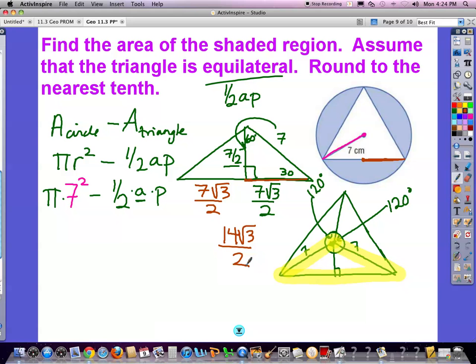Wait, 14 over 2, that's not reduced down enough. That's 7 square root 3. So this entire length is 7 square root 3. That is only one side. I need to do the entire perimeter: 7 square root 3, 7 square root 3. So that is a total of 21 square root 3. So my perimeter, 21 square root 3, apothem 7 halves.